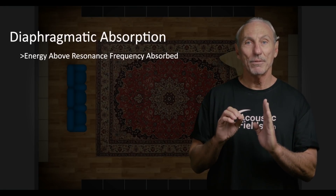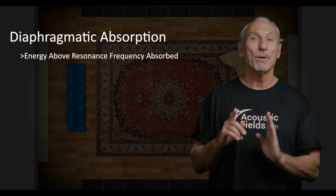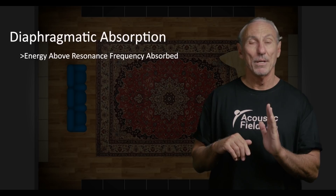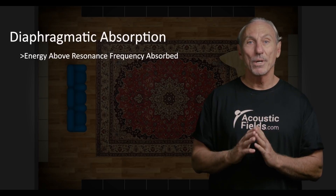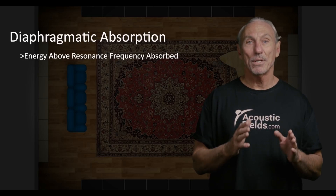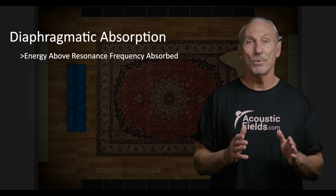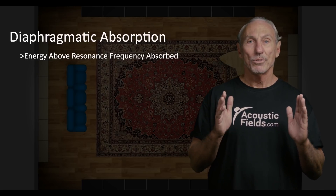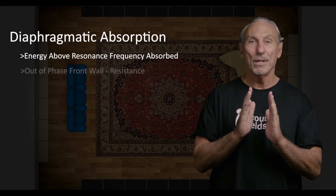If we have a resonant frequency of 40 cycles, energy above 40 cycles will be absorbed; energy below 40 cycles will not be. So we can design the cabinet depth to accommodate the particular resonant frequency we want it to tune for in the room. The depth gives us resonant frequency.